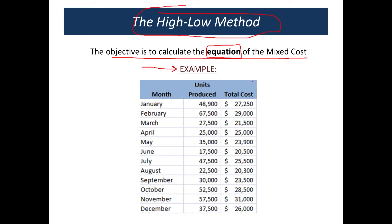Here is a series of months showing units produced and the total cost for each. Let's say we feel this is a situation that is a mixed cost — and we determined that perhaps by plotting out a scatter diagram. The first thing we want to do is identify which column is the x variable and which is the y variable. Units produced is the x variable, and total cost is the y variable.